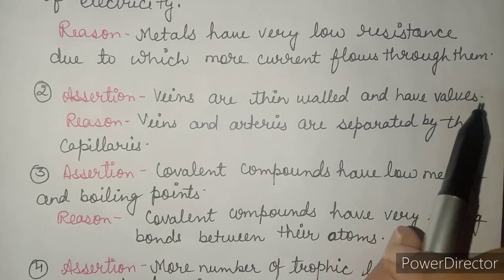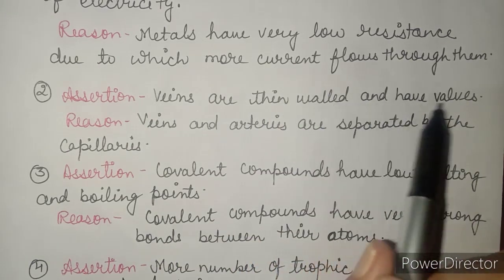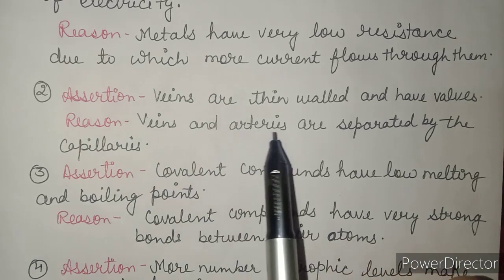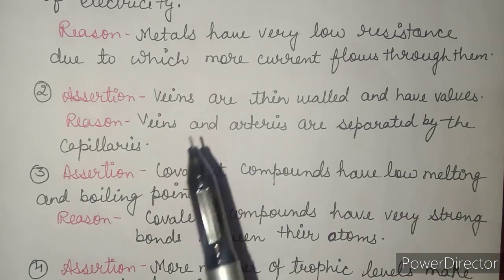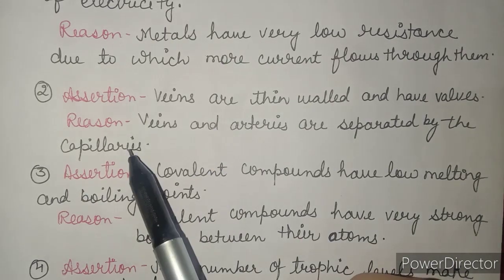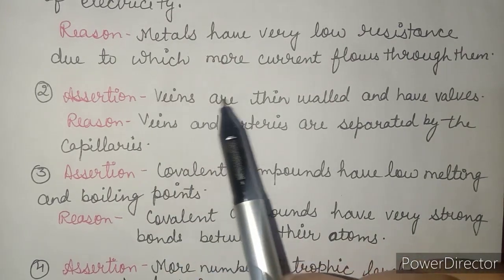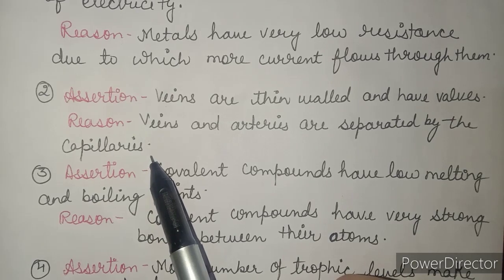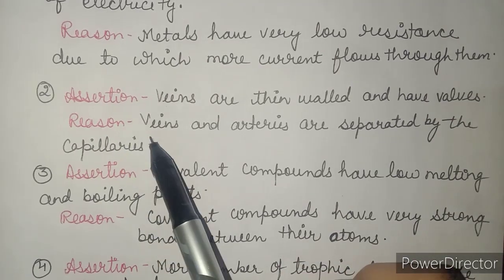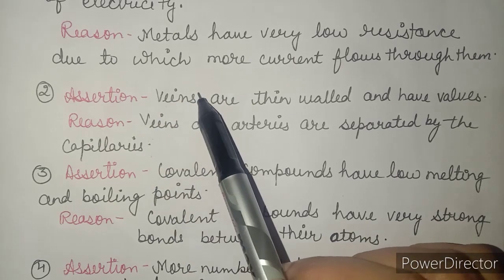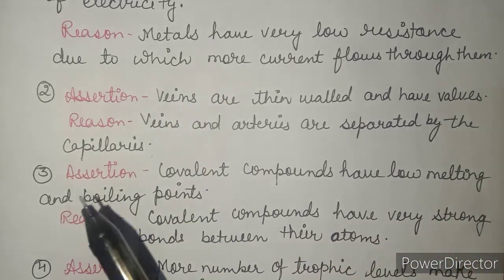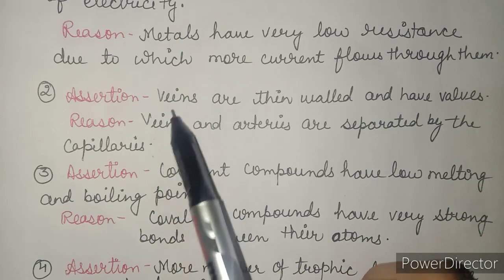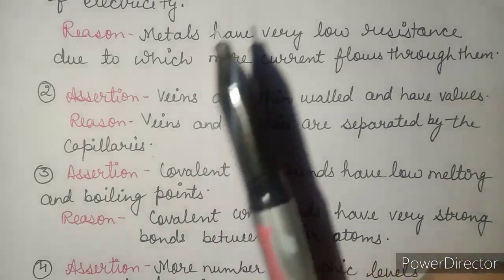The second example: the assertion is that veins are thin-walled. The reason is that veins and arteries are separated by the capillaries. Both assertion and reason are correct. But the reason is not describing the assertion — the reason about capillaries does not explain why veins are thin-walled. So option B is correct: both true but reason is not the correct explanation.